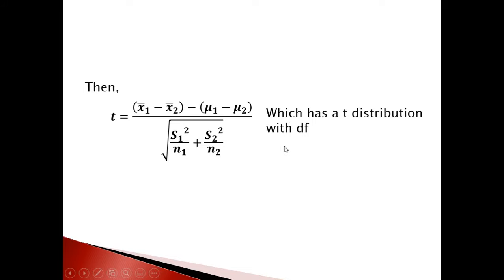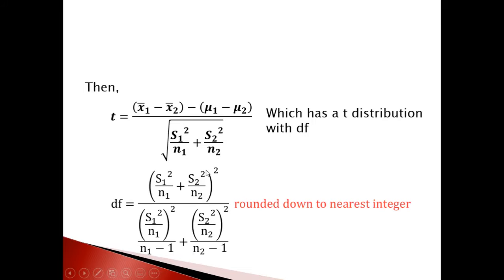You have to use the degree of freedom equation — plug in the s₁, s₂, n₁, and n₂ values. Here, s₁ is the standard deviation of sample 1, n₁ is the sample 1 size, s₂ is the standard deviation of sample 2, and n₂ is the sample 2 size.